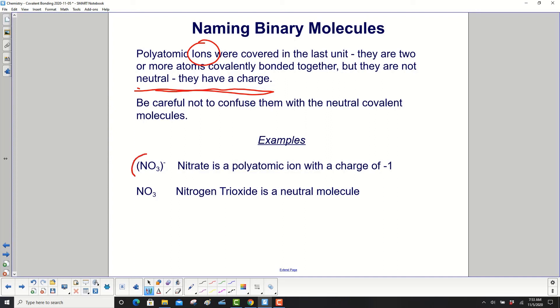Examples. NO3 with a negative like that is nitrate, that is a polyatomic ion with a charge of negative one. NO3, nitrogen trioxide, is a neutral molecule.